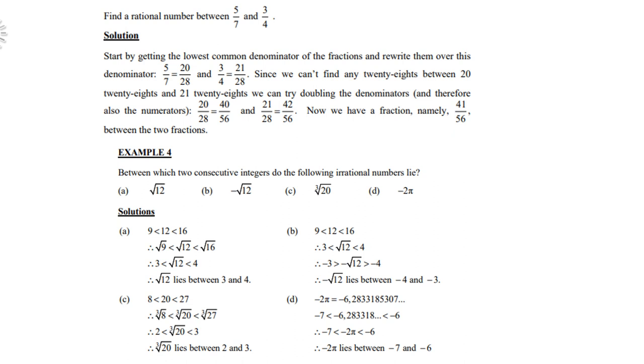C, the cube root of 20. So 20 lies between 8 and 27. Remember, we're dealing with cube root now. So I must choose 8 which is a rational number. Cube root of 8 is 2, cube root of 27 is 3. So therefore, it lies between 2 and 3.